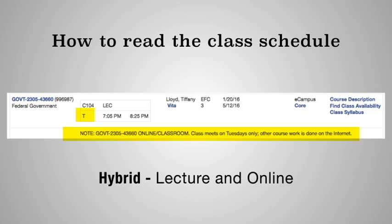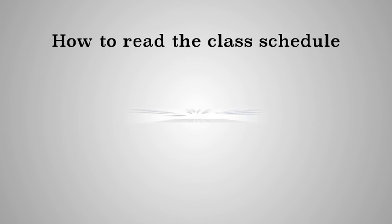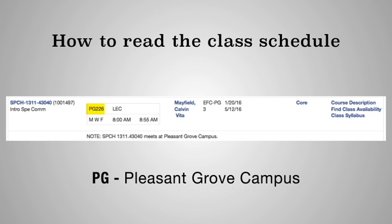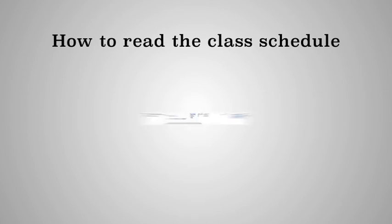If you just see one letter representing a day of the week, then that course is probably a hybrid class where some of the work is done in class and the rest is done online. Also, if you see the letters PG next to a class, that class will be held at the Pleasant Grove campus. Be sure to read the schedule of classes very carefully and choose your classes wisely. Make the first semester of your first year a success.